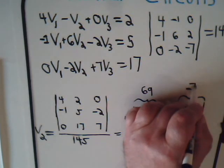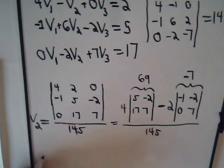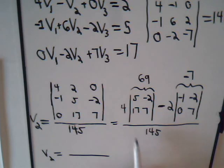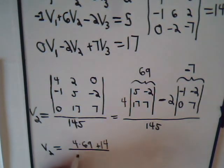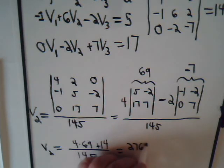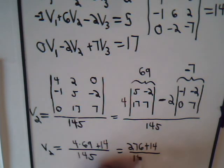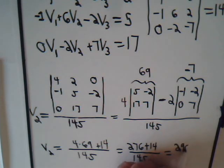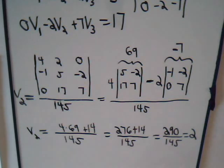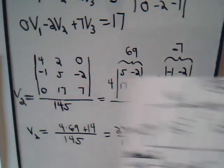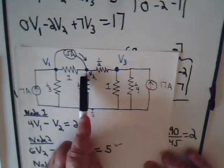So V2 will equal 4 times 69 and then negative 7 times negative 2 is plus 14 divided by 145. And this 4 times 69, that's 276 plus 14 over 145 and that's 290, divided by 145, so V2 equals plus 2 volts. So here we have a voltage of 1, and here it is 2 volts.